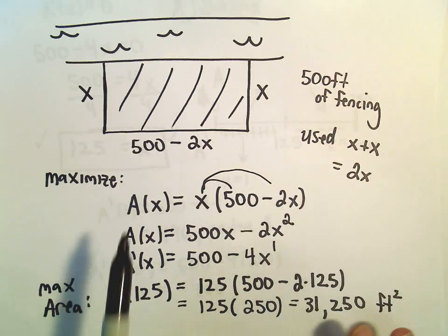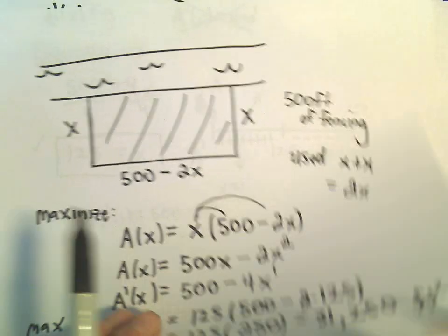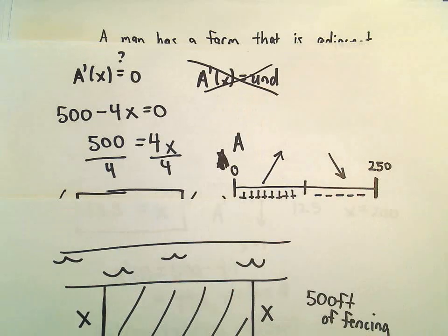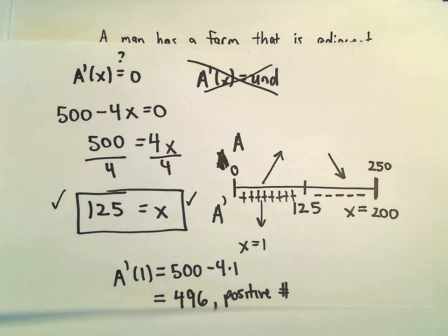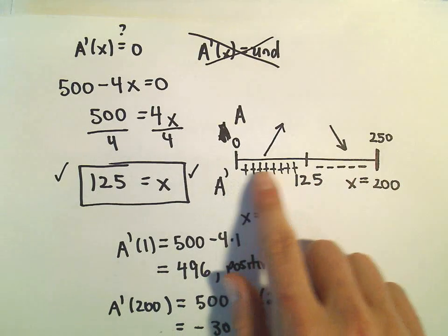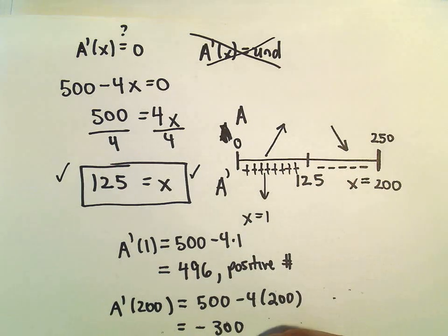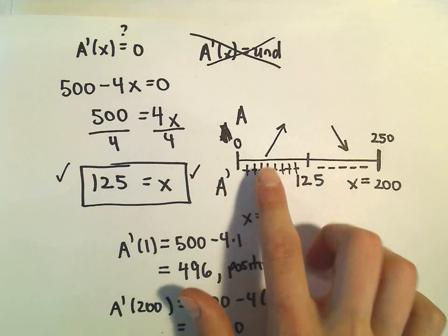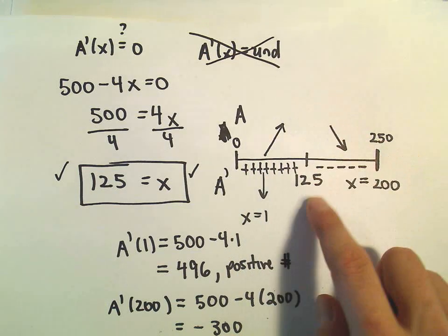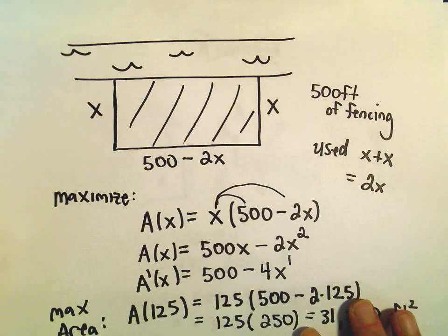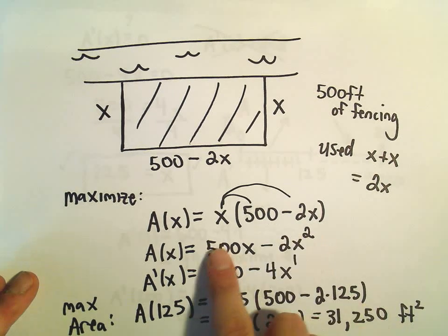So the idea is find a formula for whatever you're trying to maximize or minimize. Take the derivative. Find these critical points by figuring out where it's zero, where it's undefined. Solve those equations. In this case, we didn't have to worry about where it's undefined. Once you do that, I make my little number line. I test a point from each interval, just to figure out if the derivative is positive or negative. If it's positive, it tells me the function's increasing. If it's negative, it's decreasing. And from that, I can conclude that I've got a maximum at 125. And then it was just a matter of plugging 125 back into the formula that will actually compute that area.